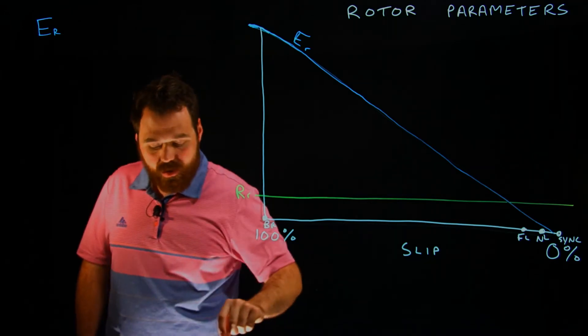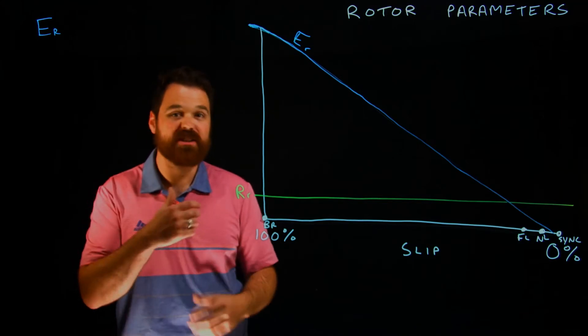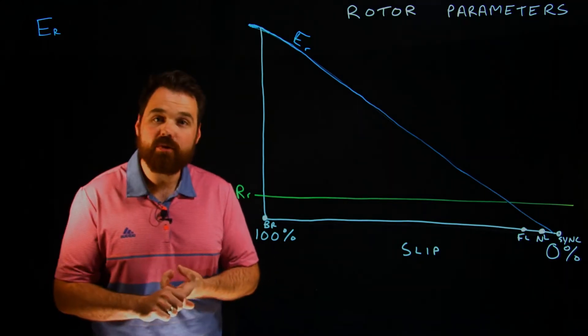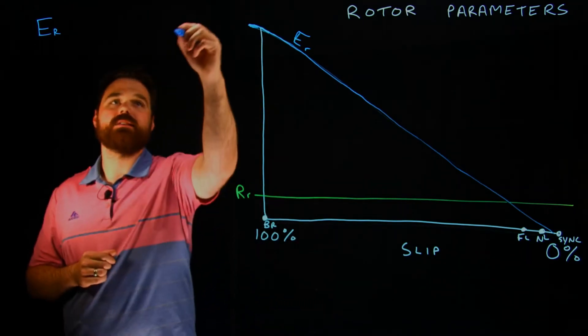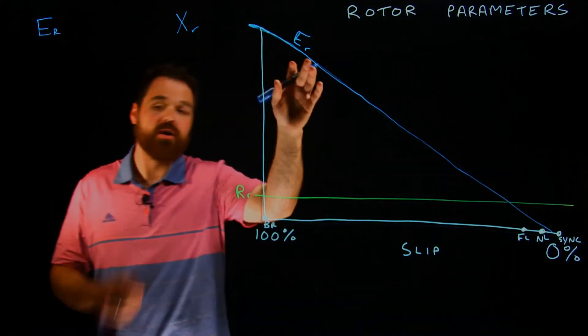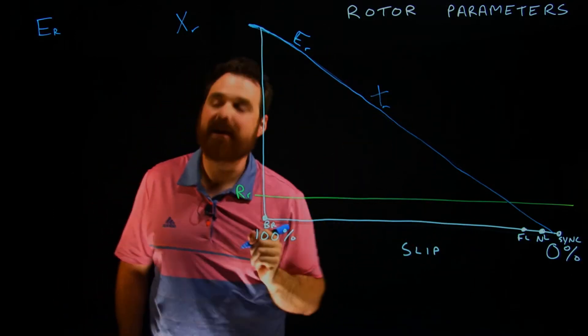We have our reactance of our rotor. So we're going to have inductive reactance inside that rotor, based upon the frequency of the rotor as well. So we're going to have reactance of the rotor, which we are also going to call directly proportional.